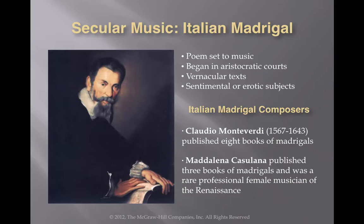Characteristics of a Madrigal include being a poem set to music. It began in aristocratic courts, and the texts were in the vernacular. They were usually about sentimental or erotic subjects. Two prominent composers are Claudio Monteverdi, whom we will discuss in this chapter and the next, and Maddalena Casullana, a female composer who wrote three books of Madrigals.